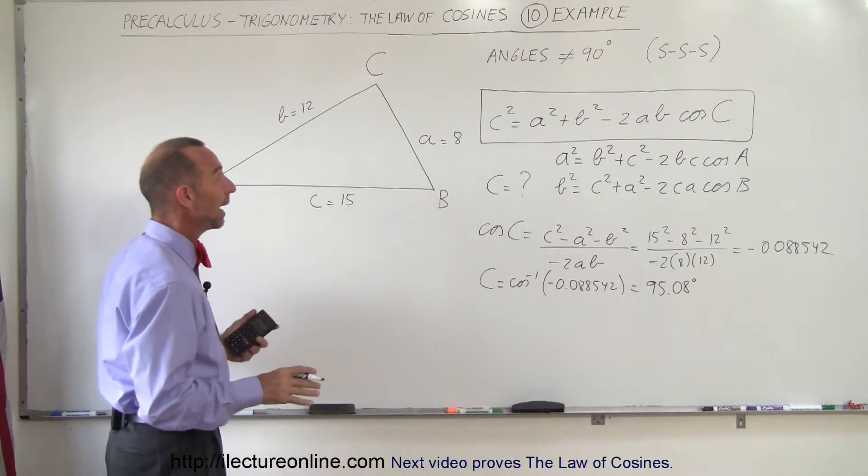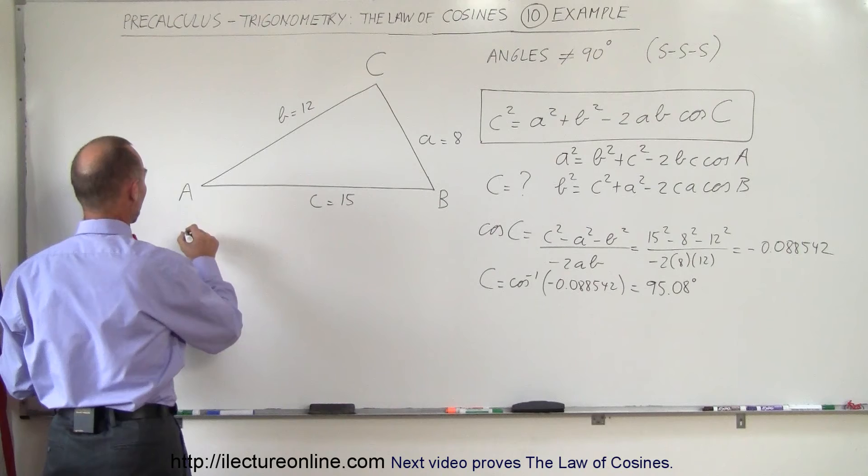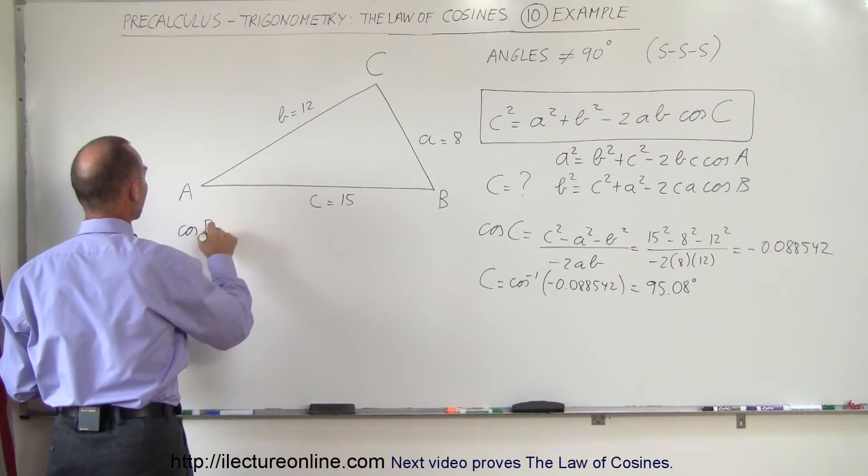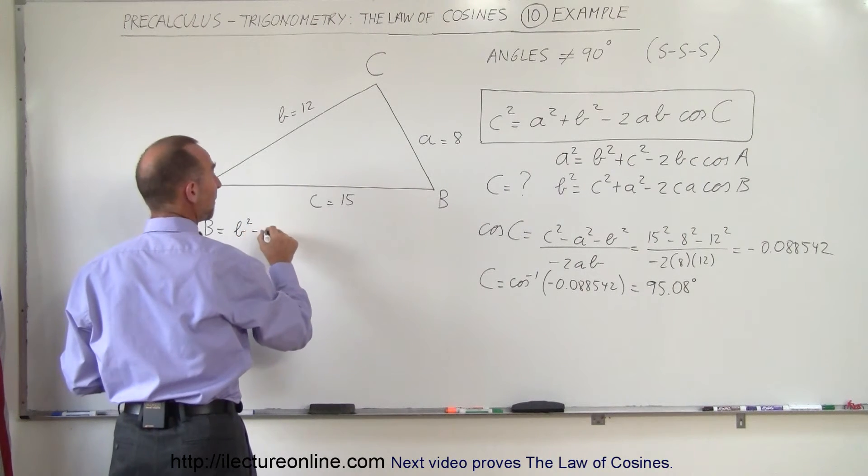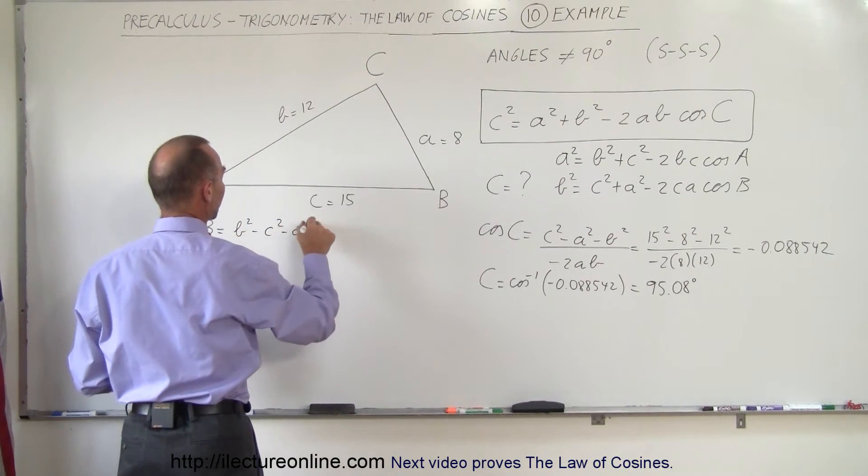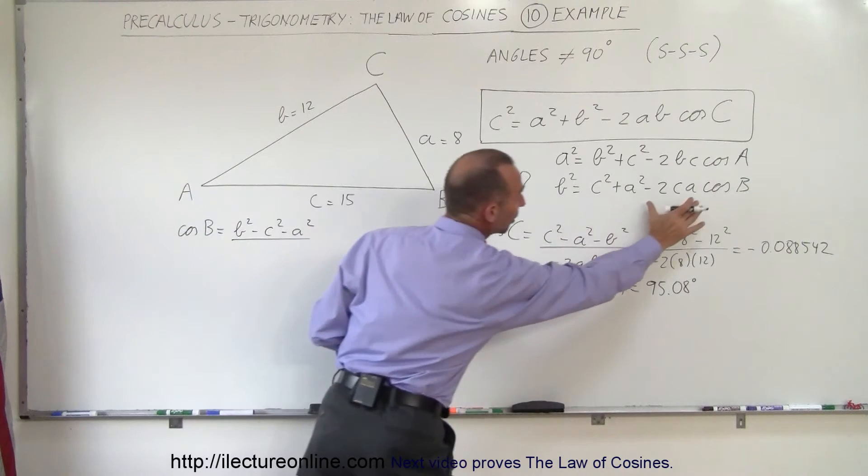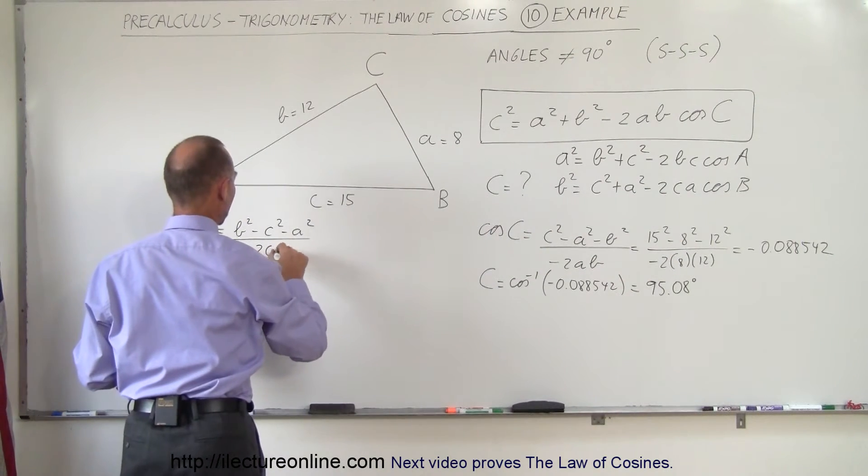Let's now do the same for angle B. The cosine of angle B is equal to, so now we'll take this equation right here. It's equal to B squared minus C squared minus A squared divided by the coefficient here, which is minus 2CA.